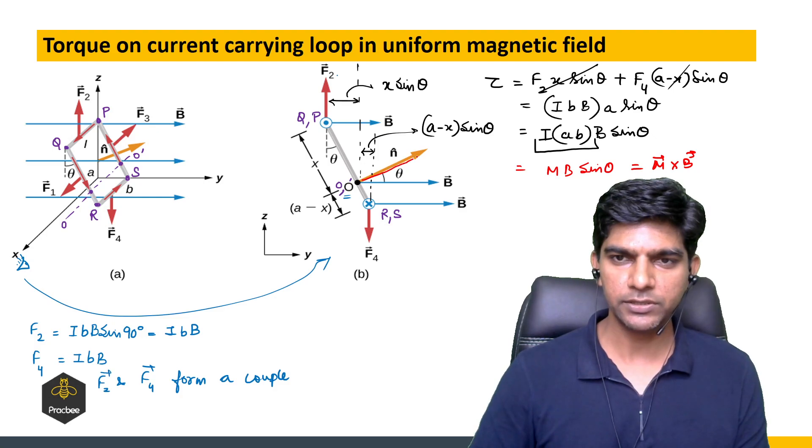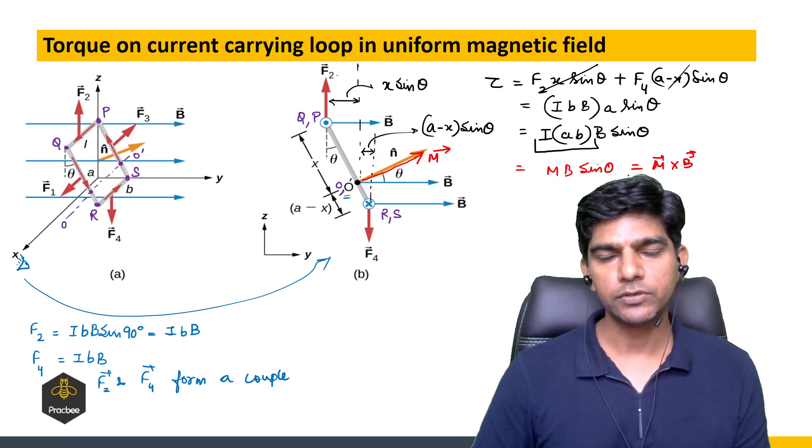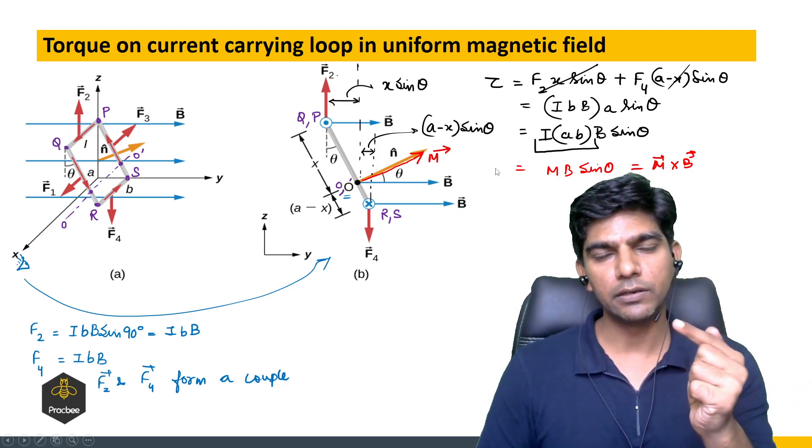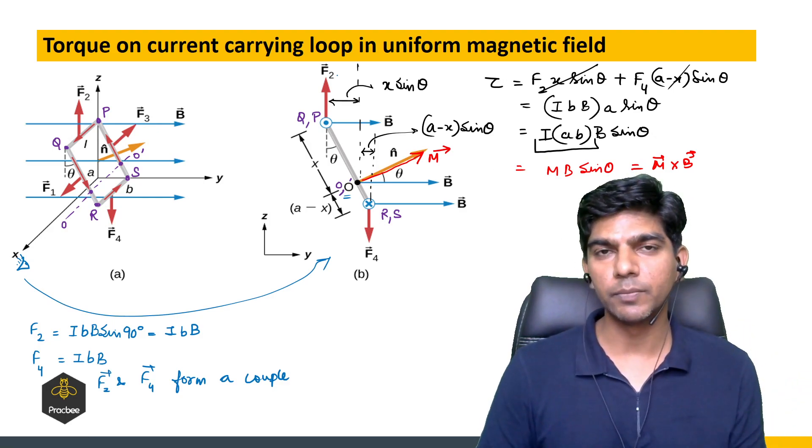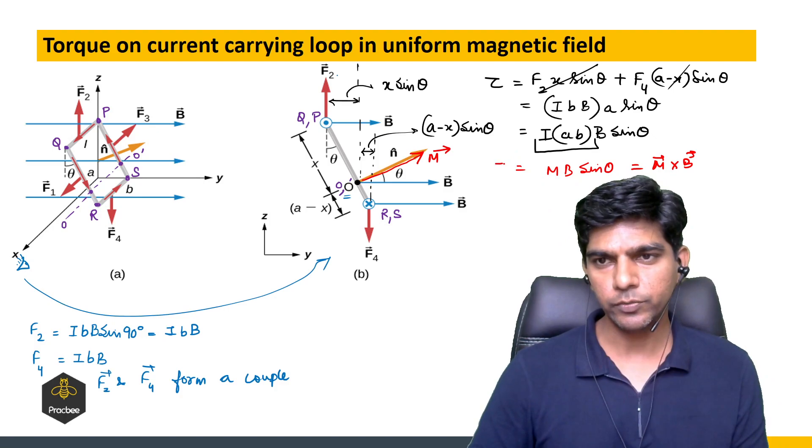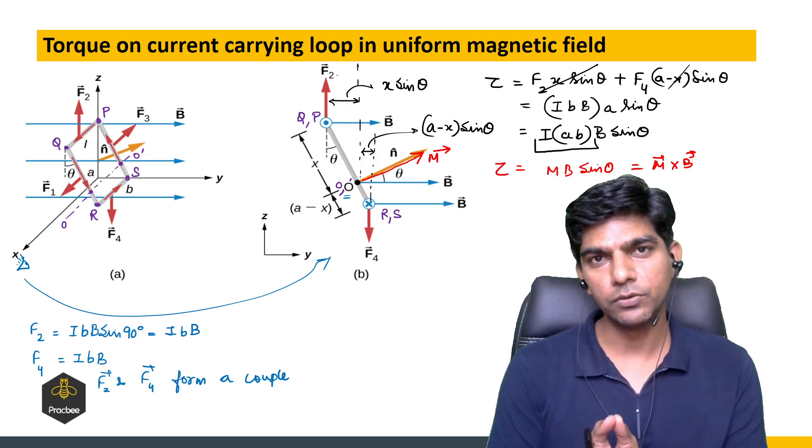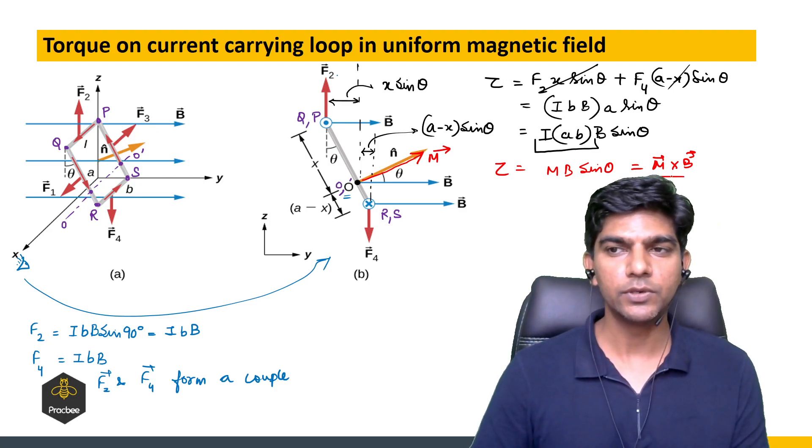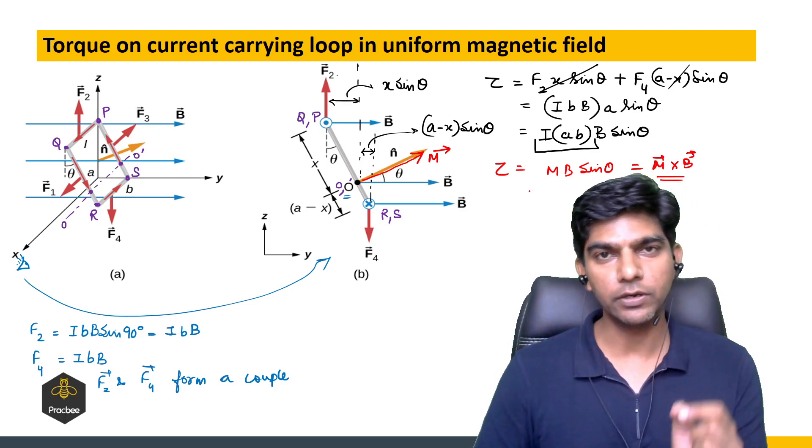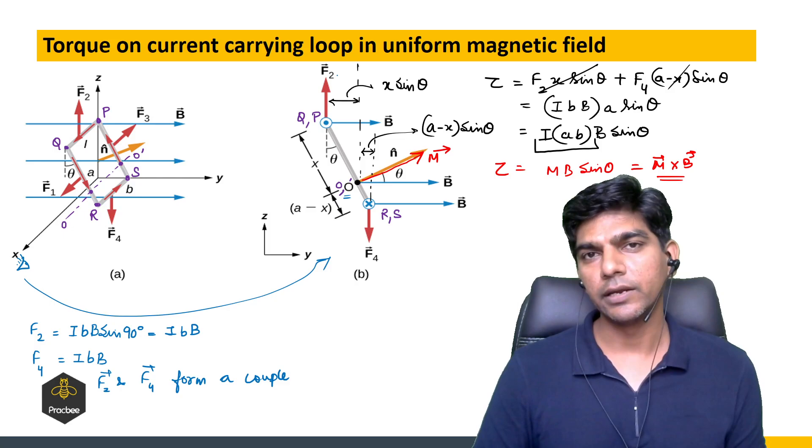This is the direction of magnetic dipole moment, so M cross B. Now this magnetic dipole will try to align itself in the direction of the magnetic field. So that is the formula. Whether we have a rectangular coil or a circular coil, you have to apply the same formula M cross B to find the torque experienced by the current carrying loop.